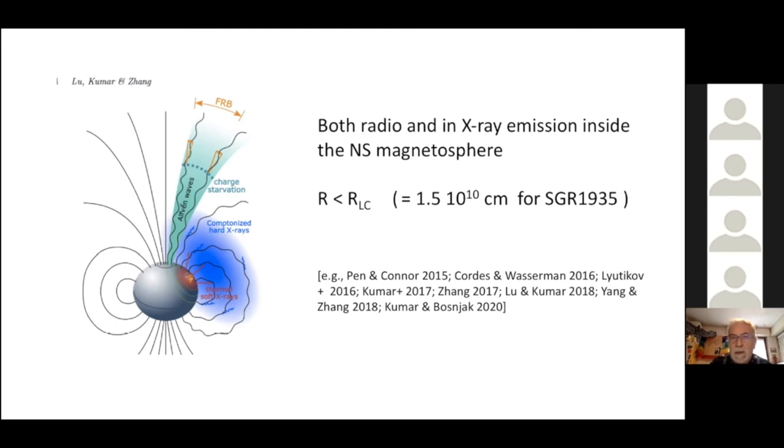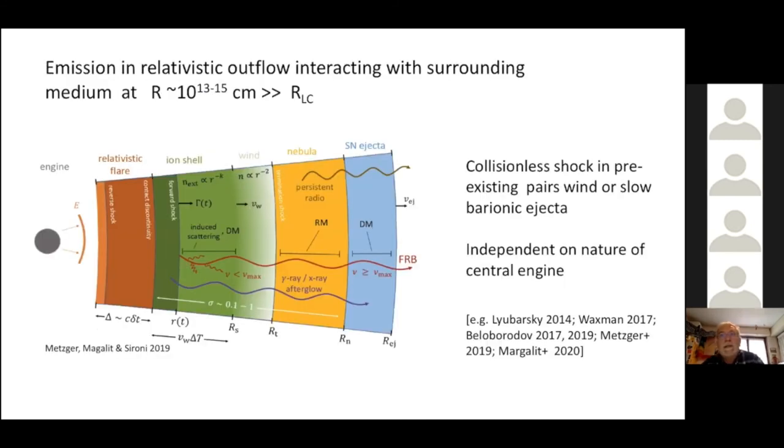The other class of models involves some ejection relativistic and interaction with circumstellar material that could be either the stellar wind, the pulsar wind emitted before, or the ejecta of previous explosions. And these kinds of models are not dependent necessarily on a magnetosphere as a central energy source.